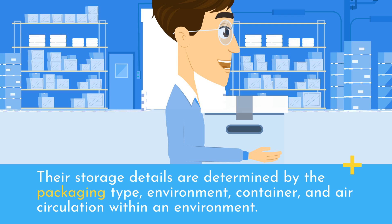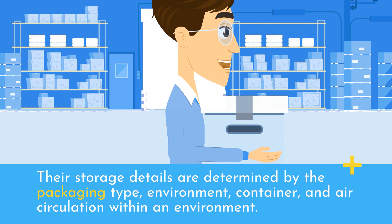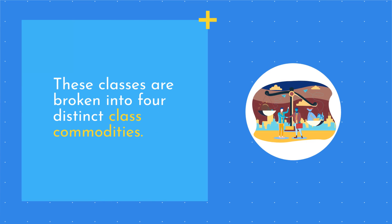Their storage details are determined by the packaging type, environment, container, and air circulation within an environment. These classes are broken into four distinct class commodities.